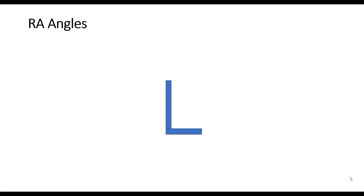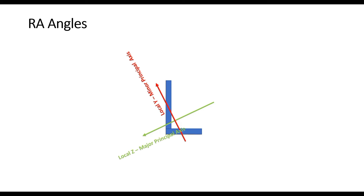Now we will look at how the angle section is oriented about the local axis system. There are two ways in which an angle section can be considered to be oriented: ST orientation and RA orientation. Let us consider the RA angle first. RA stands for reverse angle section. In the RA angle, the local axes are oriented like this. The local X axis is coming out of the page towards you. The local Z — represented by the green arrow — will be the major principal axis of the section, and the local Y will represent the minor principal axis of the RA angle section.